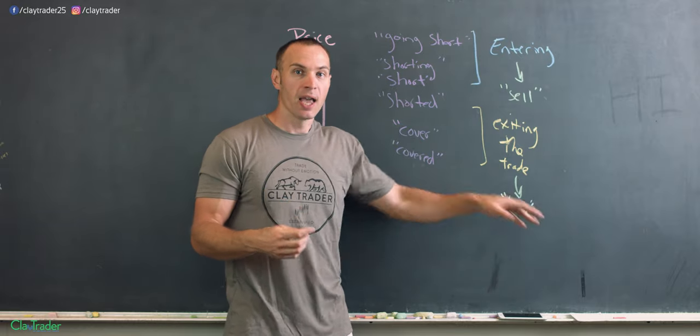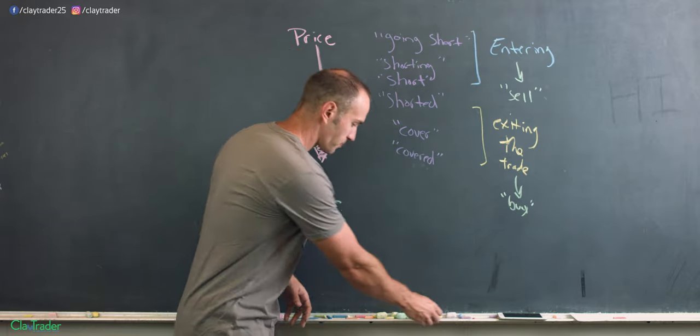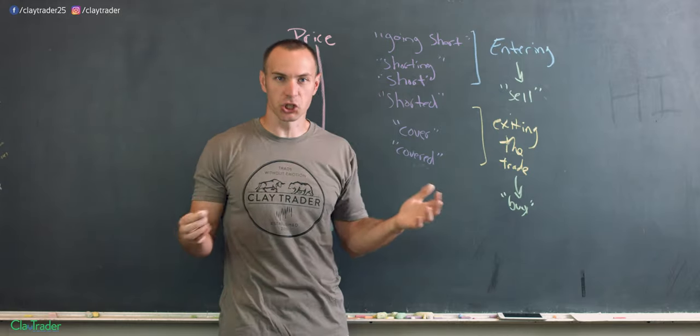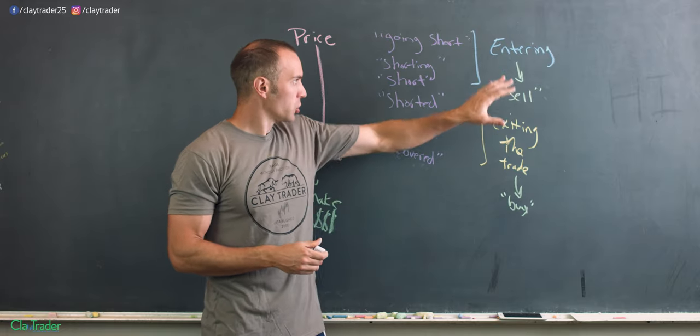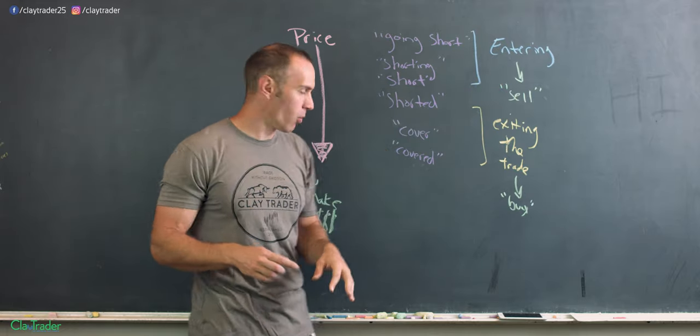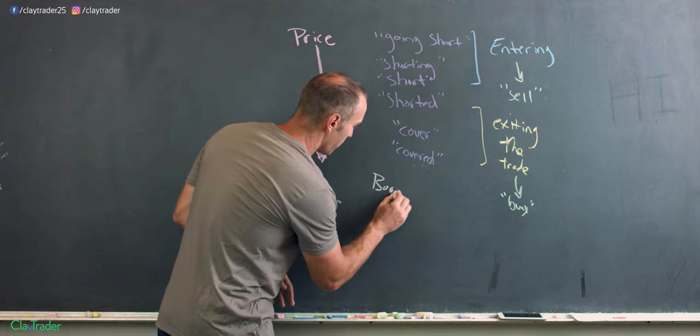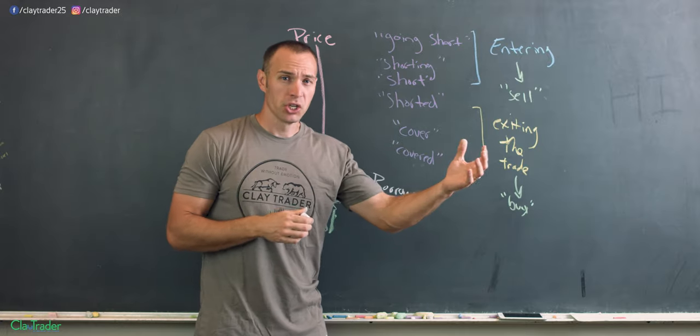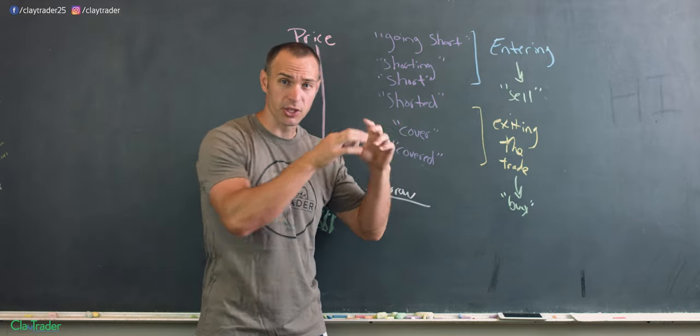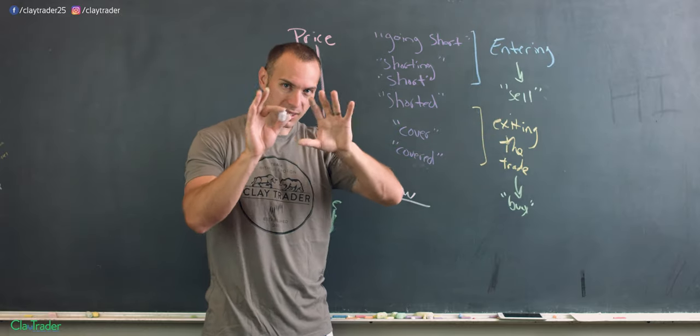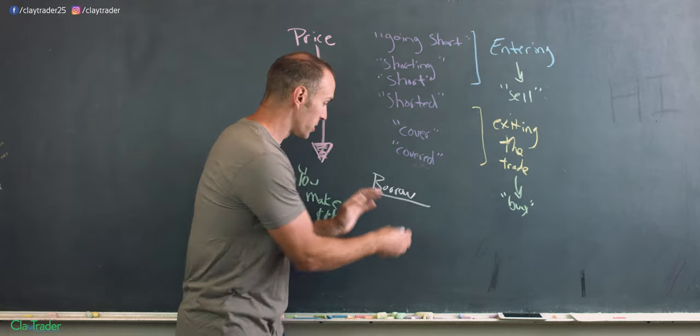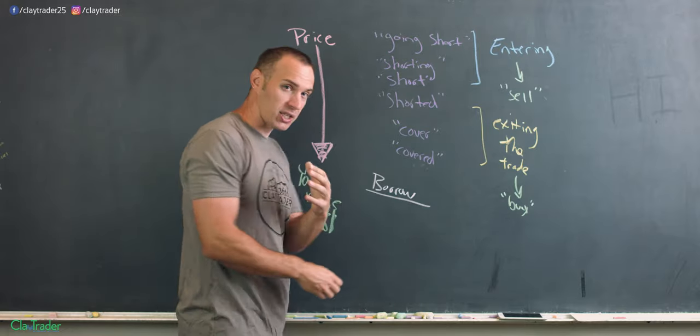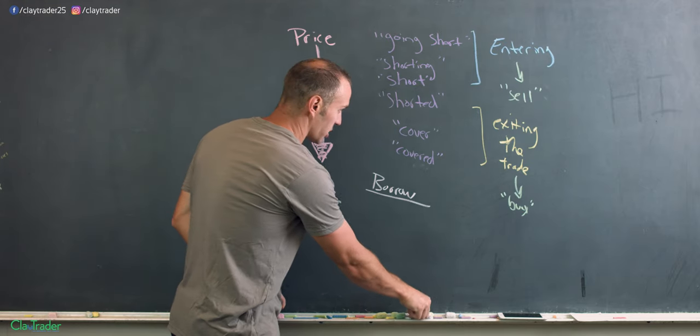So anytime you see the word cover or any sort of variation of the term, that just means that there's some sort of attribute going on with exiting the trade, which means there's buying going on. And then to Dennis's point here, what are all these things about the overarching logistics of things? But in order to short, and again that video will explain it more, you need to actually borrow. That's the main driver here of shorting is everything revolves around you need to borrow shares and stock from somebody else, and then you sell them, and then yes you will eventually give them back. But like I said I don't want to go too far down that rabbit hole.